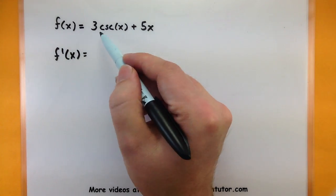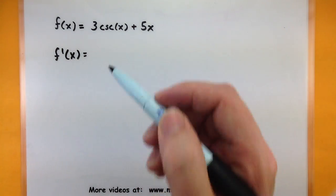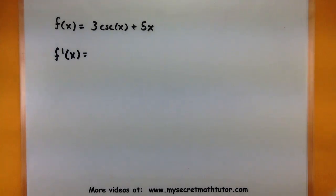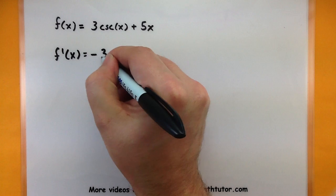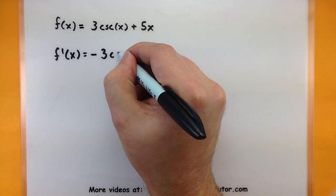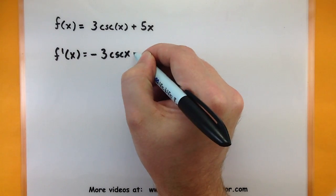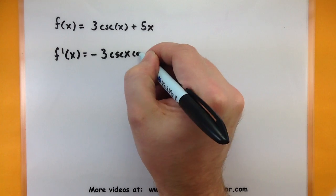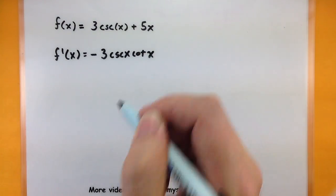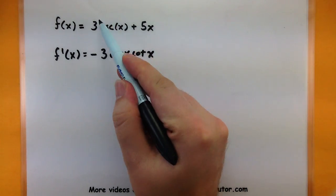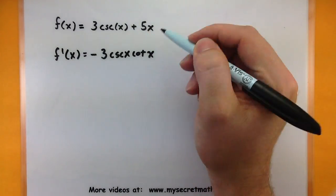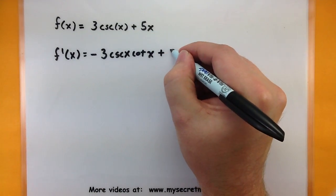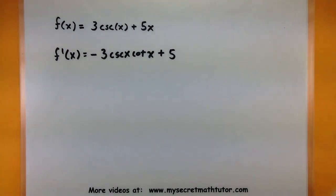The very first thing we need to take care of is this cosecant of x. Its derivative is negative cosecant times cotangent, so let's move that negative all the way out front and then write cosecant of x multiplied by cotangent of x. That takes care of the derivative of just this part. Now we take care of the derivative of the rest of it as normal — the derivative of 5x is 5.